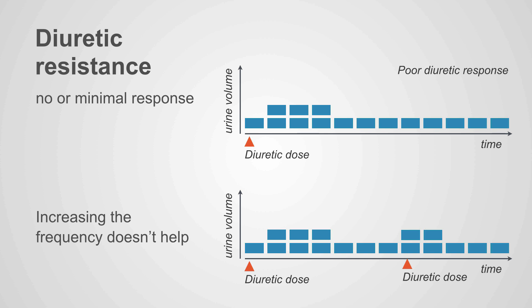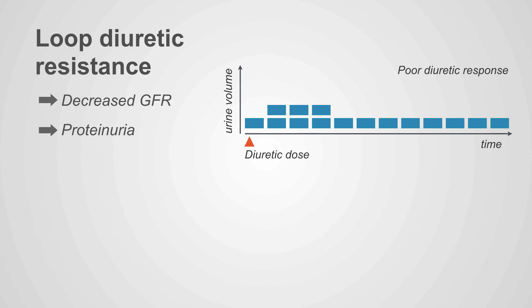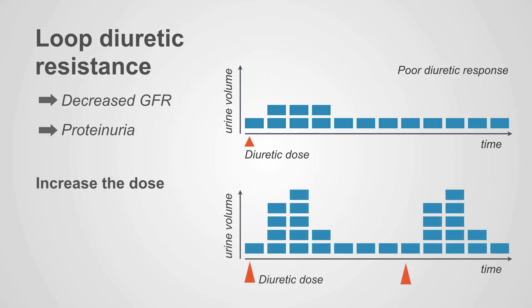The other pattern of diuretic response is no or minimal response. Here, increasing the frequency doesn't help — you just get the same poor response more often. This pattern of resistance is usually due to decreased glomerular filtration rate, renal failure, or significant proteinuria. It is thought that the proteinuria that gets into the tubular fluid binds up the diuretics that are so prone to being protein-bound. The best response to this type of resistance is to increase the dose, which can overcome the decrease in GFR.